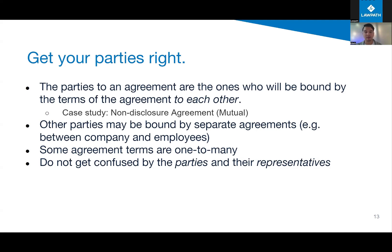Some agreement terms are one-to-many - most commonly used in terms and conditions. When you go through a website you may sign an agreement to pay a certain amount and receive a product, but there's a reference somewhere to the website's terms and conditions on a separate page, and those apply to all agreements made regardless of who the customer is. A common question I had recently: should the party to an agreement be a company or a director? Generally the purpose of having a company is that the director personally is not liable for company debts, so a director can sign the agreement but should not be subject to it.